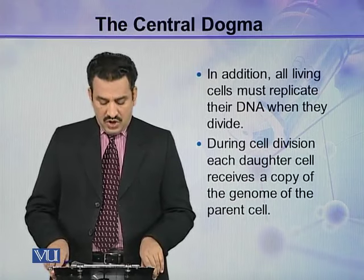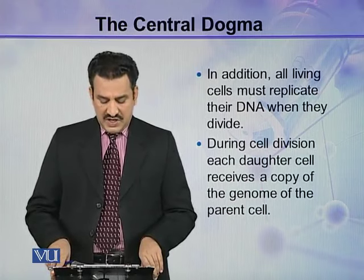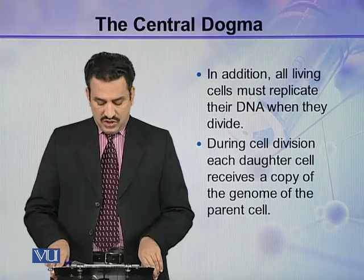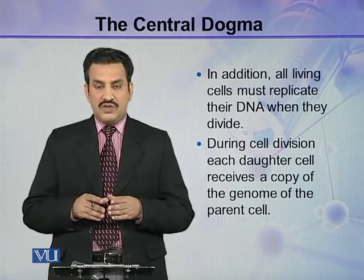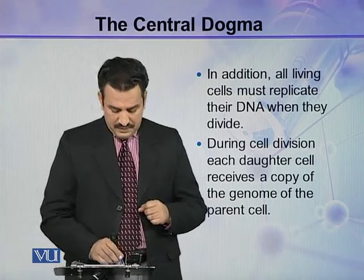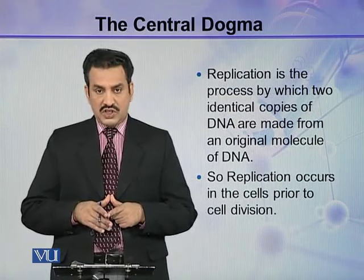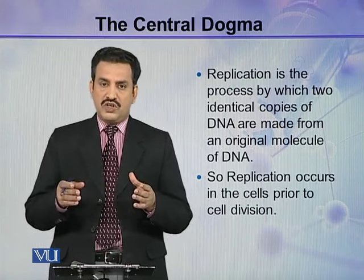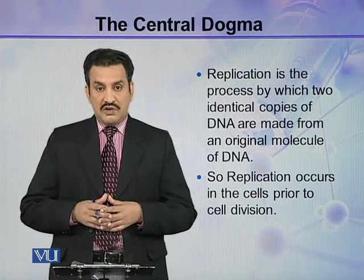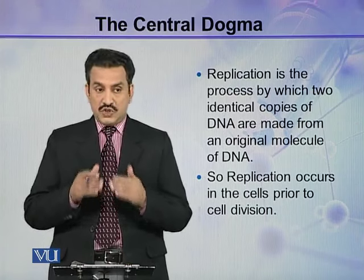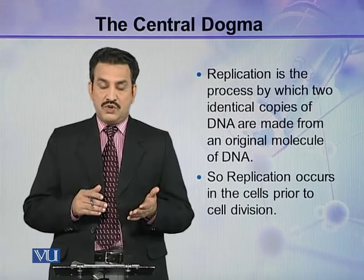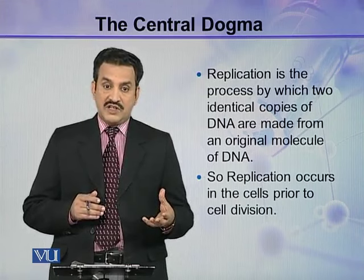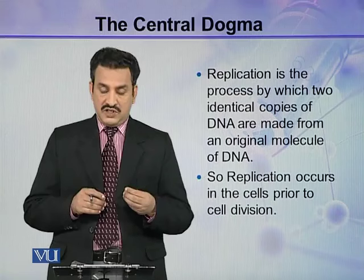In addition, all living cells must replicate their DNA when they divide. During cell division, each daughter cell receives a copy of the genome of the parent cell. Replication is the process by which two identical copies of DNA are made from the original molecule. Replication occurs in cells just prior to cell division, because it is a prerequisite — if the cell is going to divide, it must have a new copy of DNA.